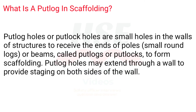What is a putlog in scaffolding? Putlog holes or putlock holes are small holes in the walls of structures to receive the ends of poles, small round locks, or beams called putlogs or putlocks, to form scaffolding. Putlog holes may extend through a wall to provide staging on both sides of the wall.